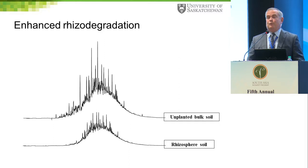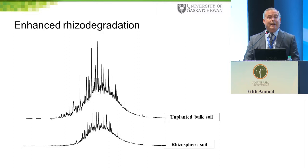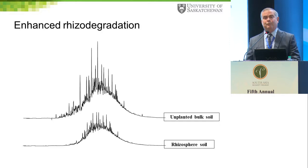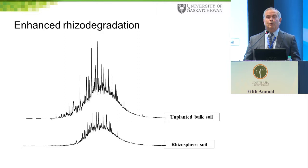Some of you may be familiar with phytotechnologies — plants can be used to produce different kinds of chemicals, and also as agents of phytoremediation. Plants and their associated microorganisms can do a variety of things: above ground there's phytovolatilization, phytodegradation, and phytoextraction, where many plants accumulate metals and salts and remove them from the soil. Below the root zone there's phytostabilization, where chemicals are stabilized and prevented from leaching, and rhizodegradation, where chemicals are actually broken down.